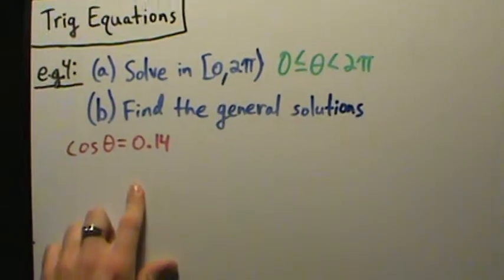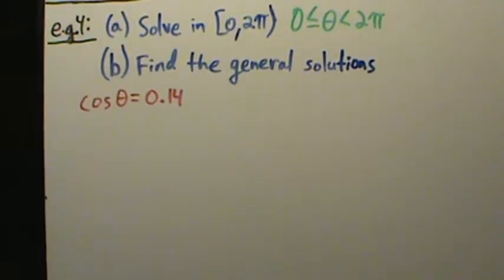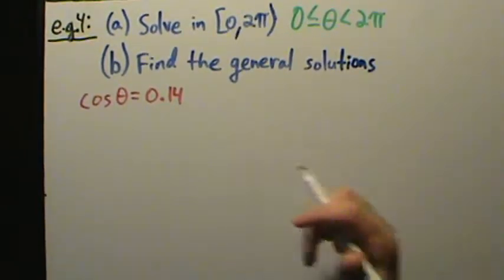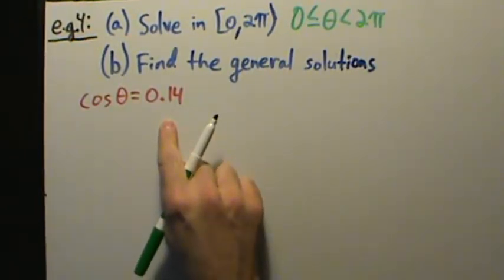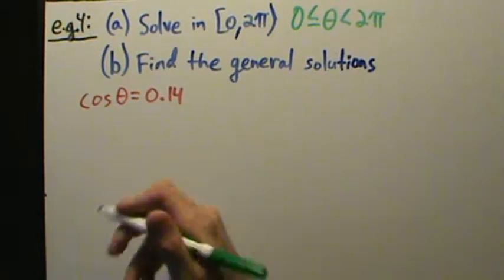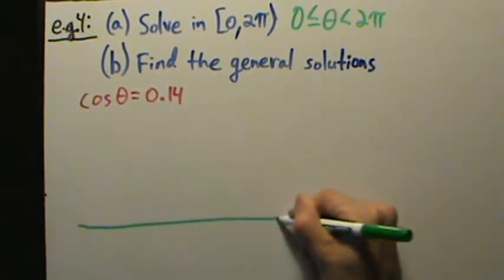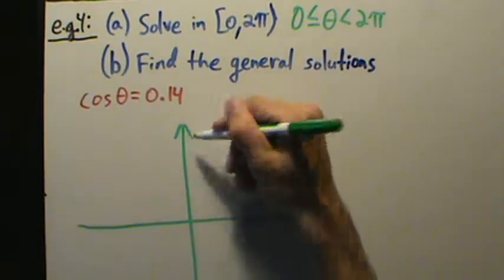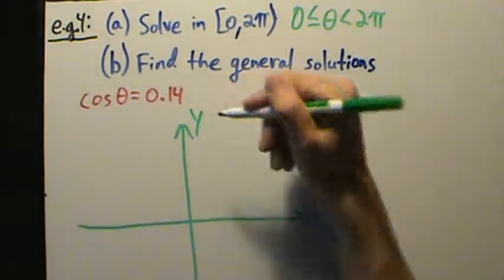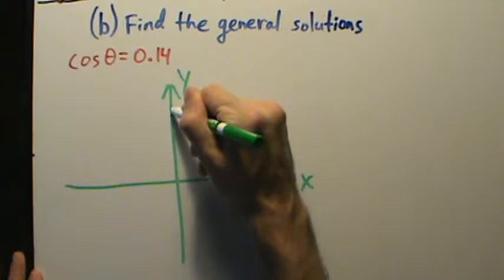Okay, so cosine of theta equals 0.14. We're going to start this the same way we did the last couple of examples, and notice 0.14 is not a special value that's on the unit circle, so we can't just use that directly, but we can still use the symmetry properties like we've been using. So let's go ahead and draw a unit circle here.